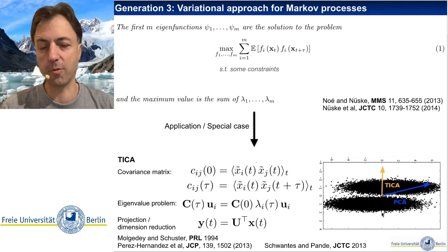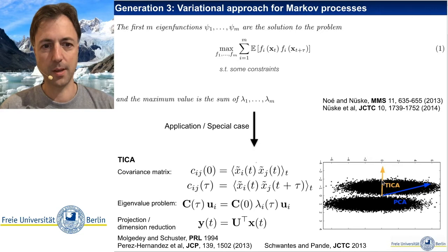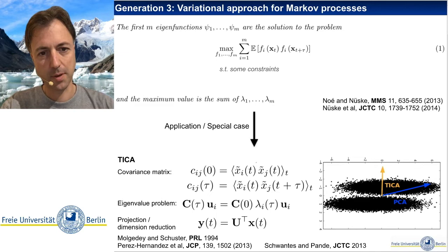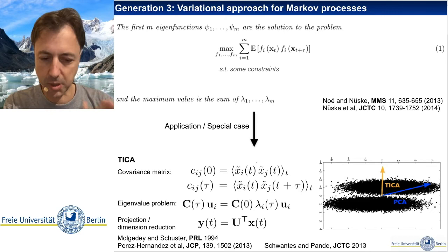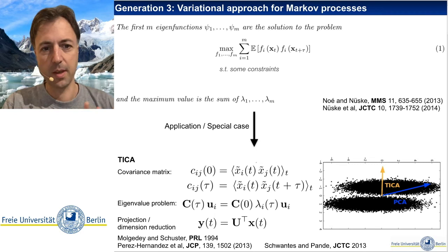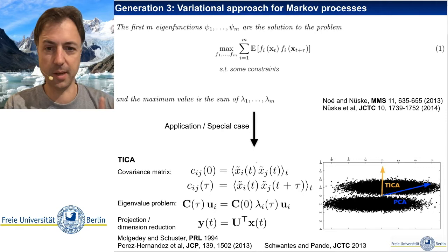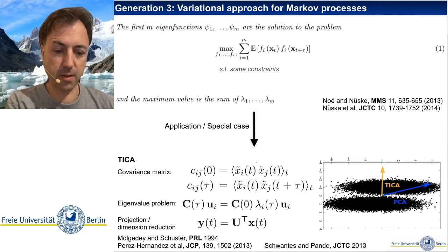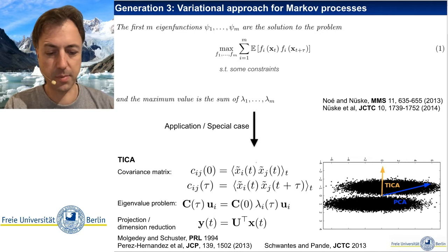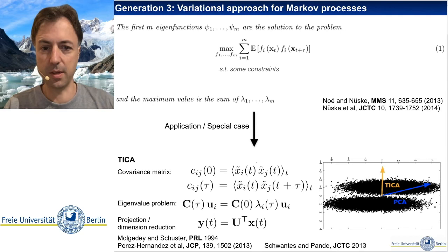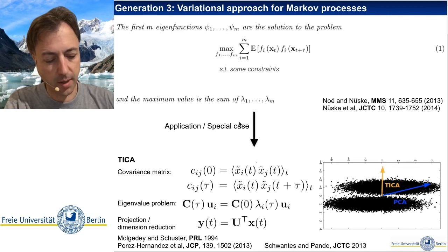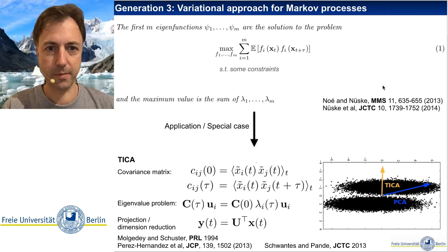Using this TICA projection, we can do clustering in this low-dimensional space and construct Markov state models with relatively few states that are still high quality. There is also a connection to dynamical systems: dynamical mode decomposition (DMD, 2010) and extended dynamical mode decomposition (EDMD, 2014) are extremely similar to TICA and this variational principle. In fact, extended dynamic mode decomposition is exactly equivalent to this variational approach for Markov processes from 2013.